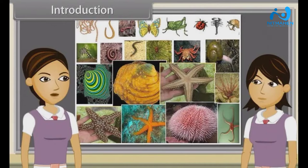Now we are going to discuss characteristics of hemichordates, chordates, vertebrates, cyclostomata, chondrichthyes, osteichthyes, amphibians, reptilia, aves and mammalia.